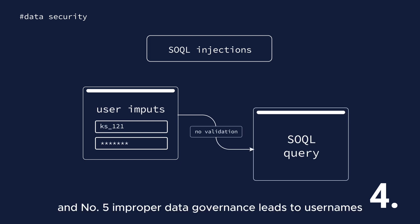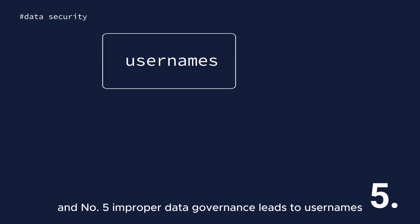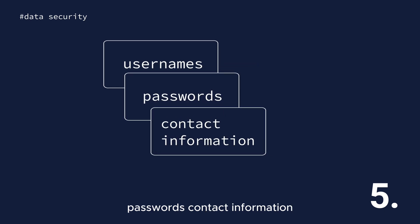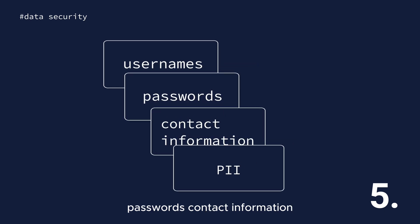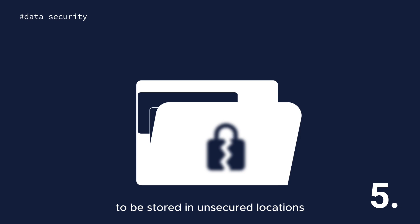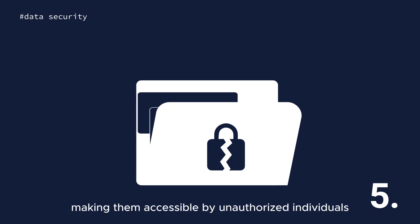And number five: improper data governance leads to usernames, passwords, contact information, PII, and other sensitive data being stored in unsecured locations, making them accessible by unauthorized individuals.